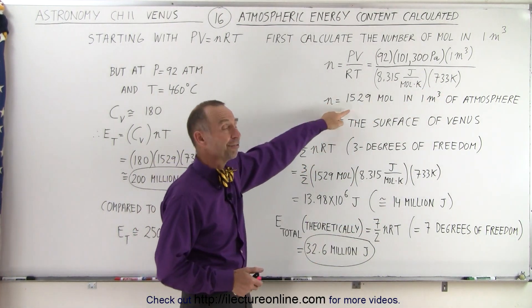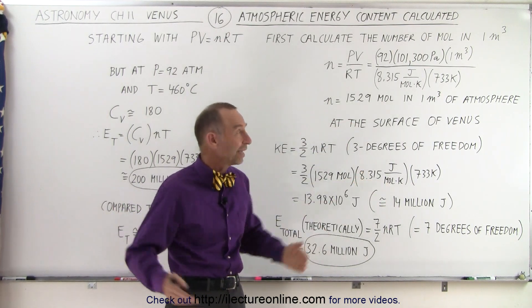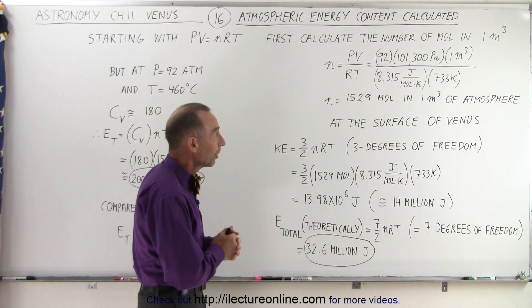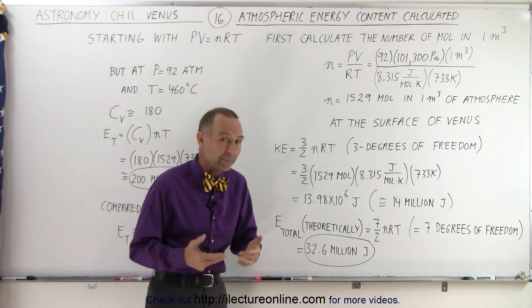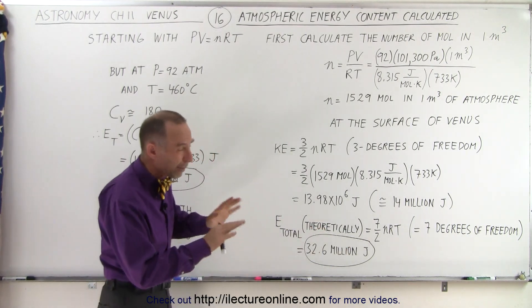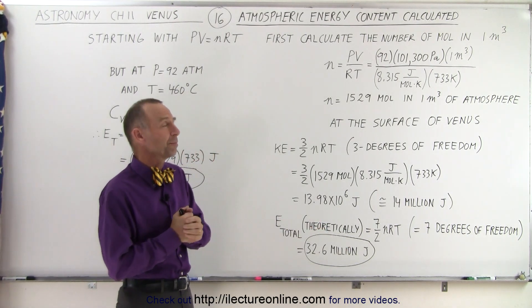It turns out there's a little bit more than 1500 moles of gas in one cubic meter on the atmosphere of Venus, which is quite a bit more than we'd find on the Earth, which is about 42 moles per cubic meter on the surface.